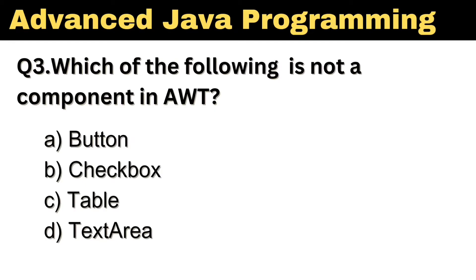Question number 3: Which of the following is not a component in AWT? The right answer is Option C: Table.